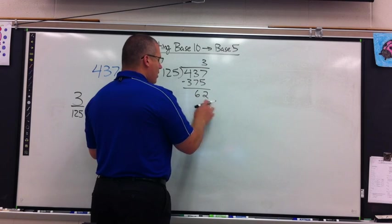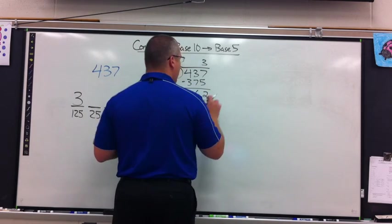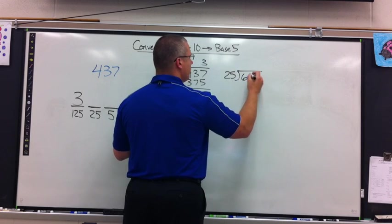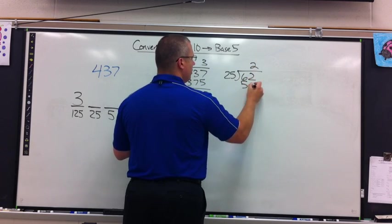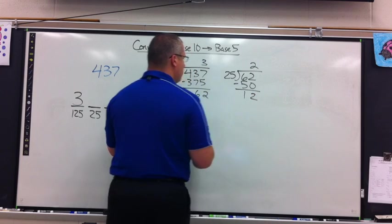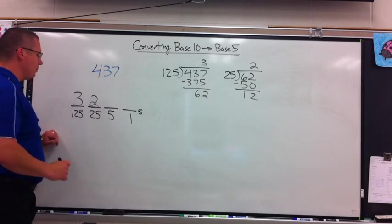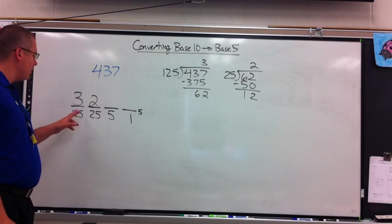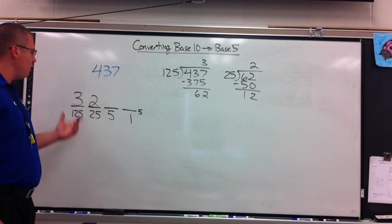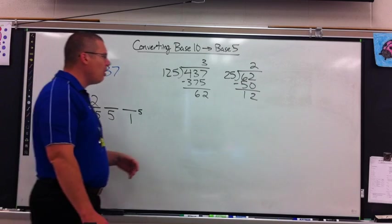I take my remainder and use that to figure out how many 25s I will need. So I'll take 25 into 62 — that should be 2, with a remainder of 12. An easy way to check: are any of these digits 5 or higher? No — so far so good. If you do get a 5 or higher, that means something went terribly wrong.